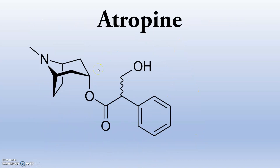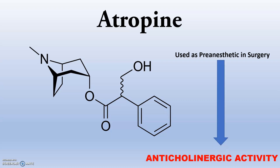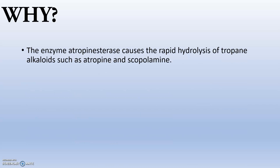Atropine is derived from Atropa belladonna — it's a plant. It is normally used as a pre-anesthetic in surgery due to its anti-cholinergic activity. However, it cannot be used as a pre-anesthetic in rabbits, despite having anti-cholinergic activity that would otherwise be useful in pre-anesthetic settings.